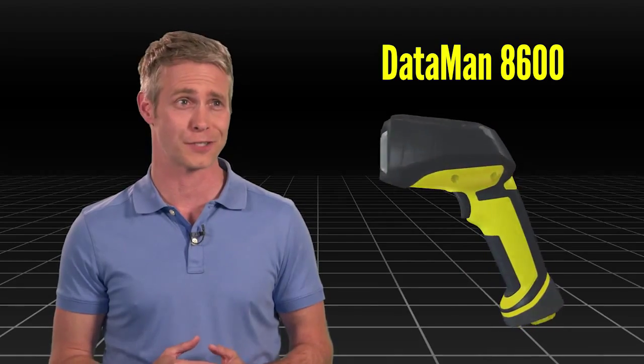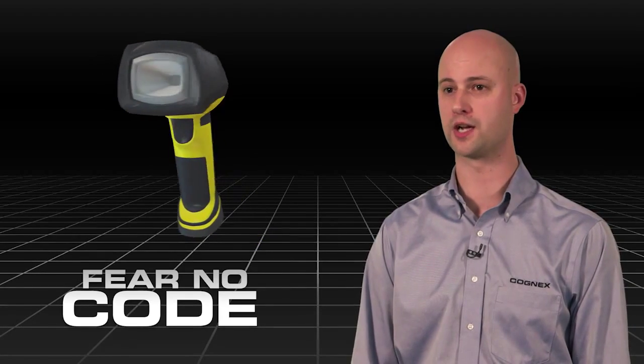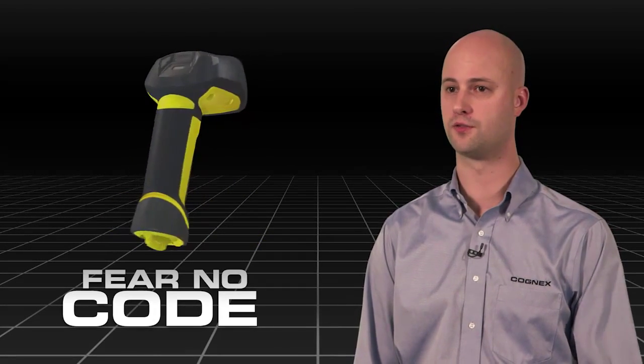That's impressive. I can see why Cognex is the top choice for industries around the world. So tell me, what are some of the key applications that you see for the 8600? Well, basically anything where there's a wide variety of challenging-to-read direct part mark codes.